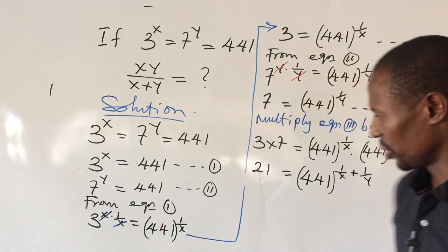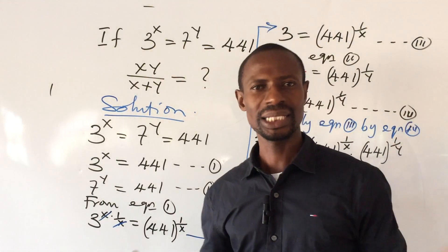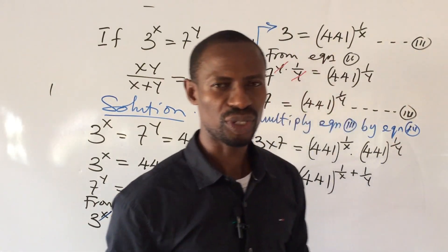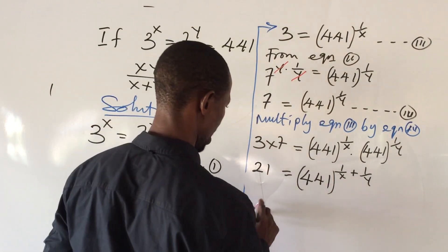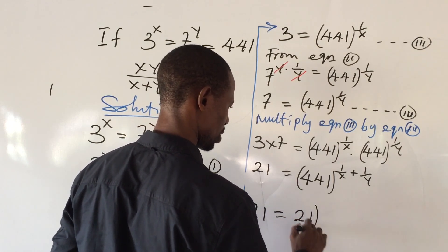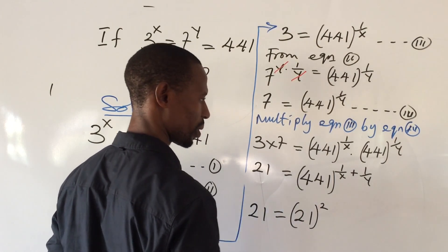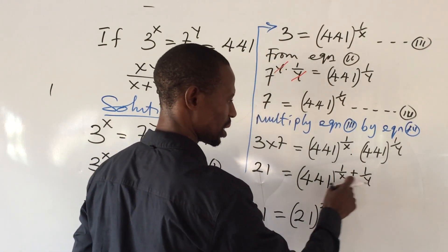Now take a good look at this 441. This can also be expressed as 21 to the power of 2. In other words, 21 times 21 will give us 441. So we can rewrite this expression as 21 equal to 21 to the power of 2 all into...